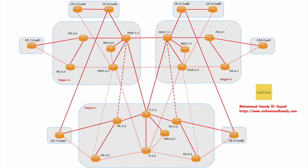PE-P1Y is the first router in Region Y, which also functions as a PE-P router. Back in Region X, PE3X functions as a PE router only — it connects to customer routers, is number three, resides in Region X, and is connected to PE-P1X. As mentioned, Region Y is identical to Region X, with the same number of routers and same connections.